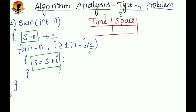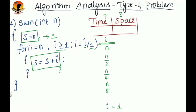We have to find out the number of iterations. For each iteration, i value is divided by 2. Initially i is n; after the first iteration it will become n/2, then n/4, then n/8. This pattern will continue till i is equal to 1, because that is our for loop condition. The constant value here is 2.